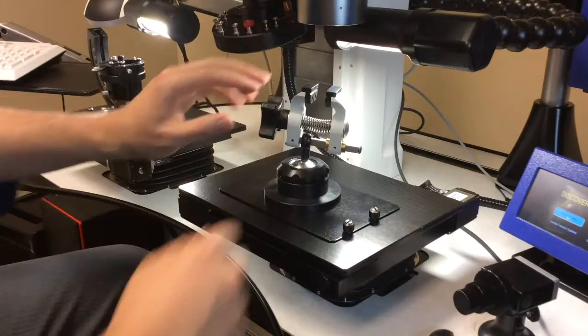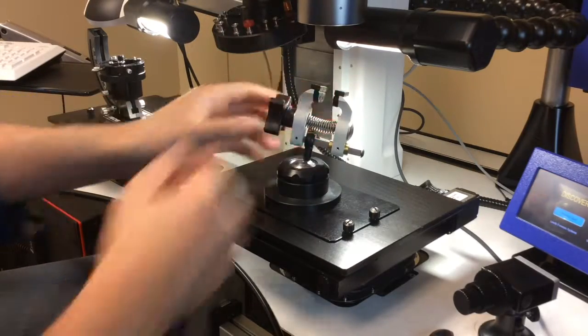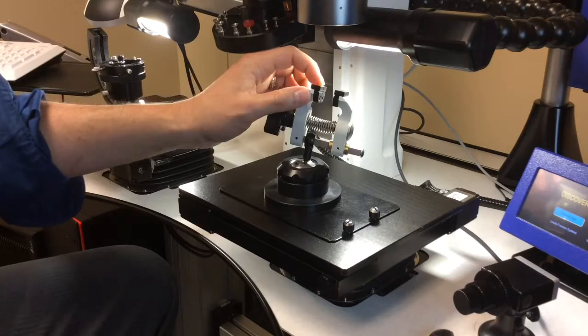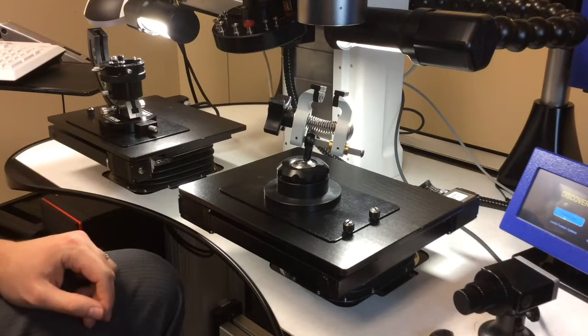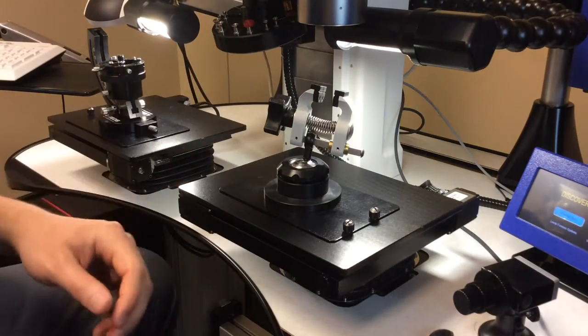What's important to note is any part of the vise that's going to touch your evidence is made out of this machinable plastic called Delrin, which is softer than brass so it doesn't add tool marks to your tool marks evidence.